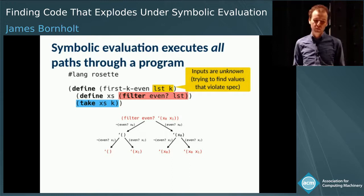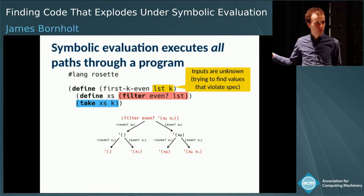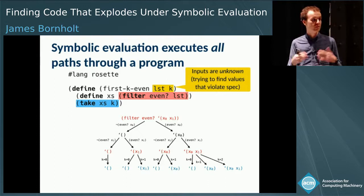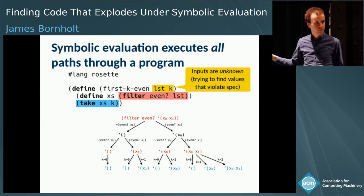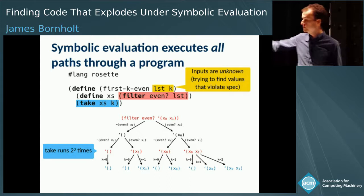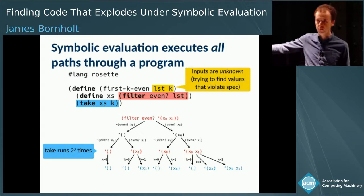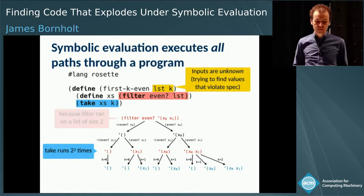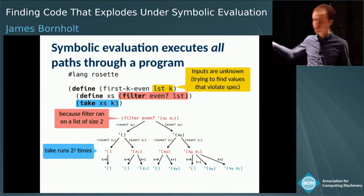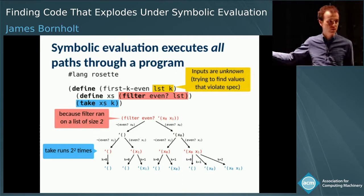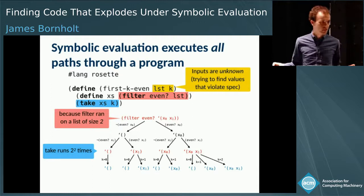Only then can we run the take statement — and we can't run it just once, because we have four different paths. We also don't know k, so we have to do even more forking. At the end of execution, take ran four times. A naive interpretation would say take is the problem, since it ran the most times. But actually the problem is filter — filter was the one that created all these paths. Take was just dealing with what filter gave it. To fix this function, you really need to fix the filter that came first.